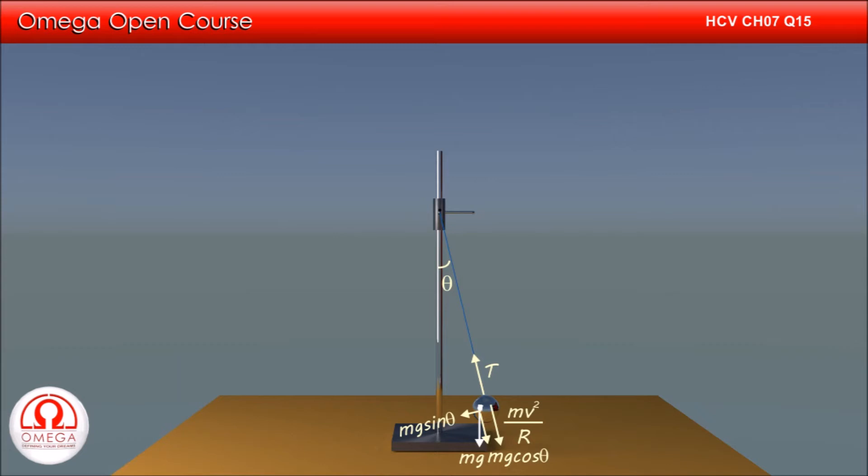Since the bob is not moving in radial direction, net force on it in radial direction is 0. Therefore, T is equal to mv square by r plus mg cos theta.